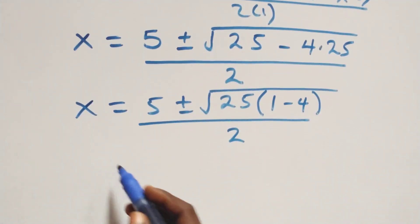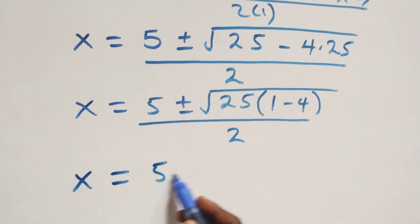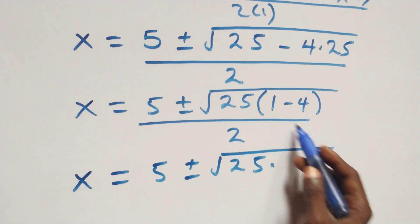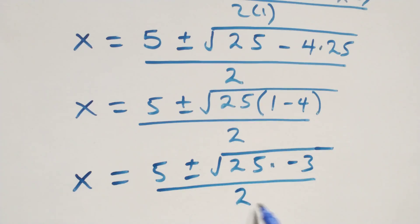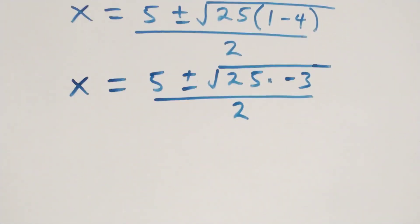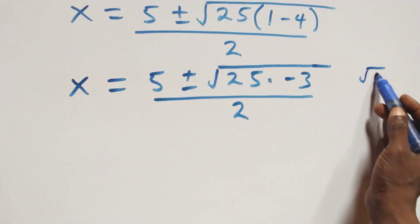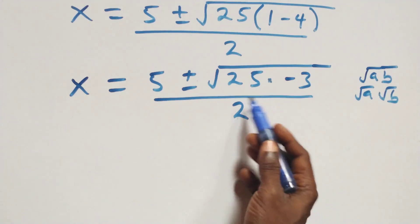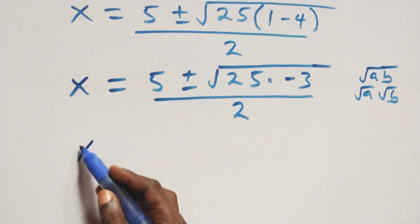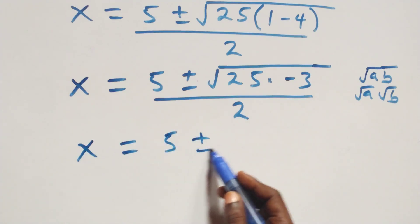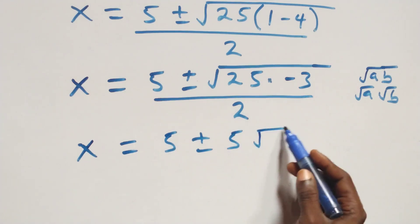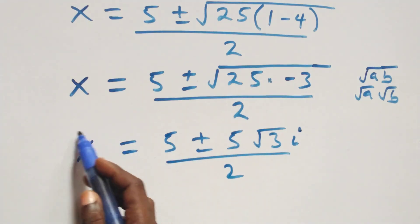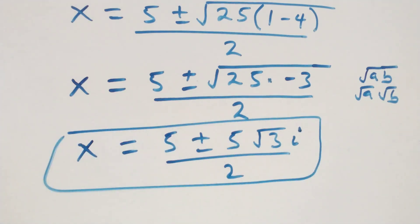Next step, this becomes x equals to 5 plus or minus square root of 25 times negative 3, over 2. Separating the root — root of 25 is 5 — we have x equals to 5 plus or minus 5 times root of negative 3, which is root 3 times i, over 2. So here we have two complex solutions.